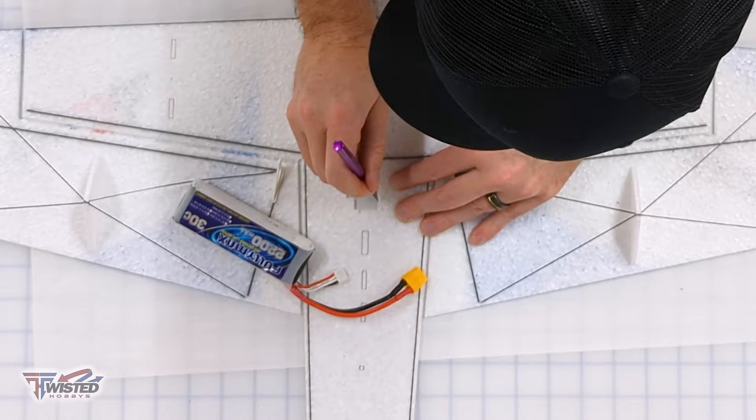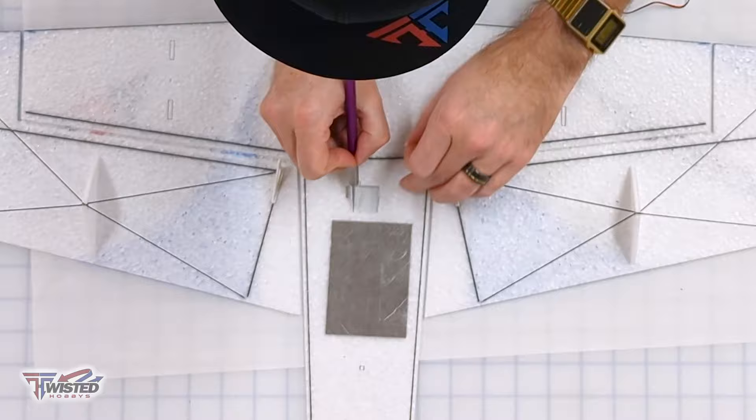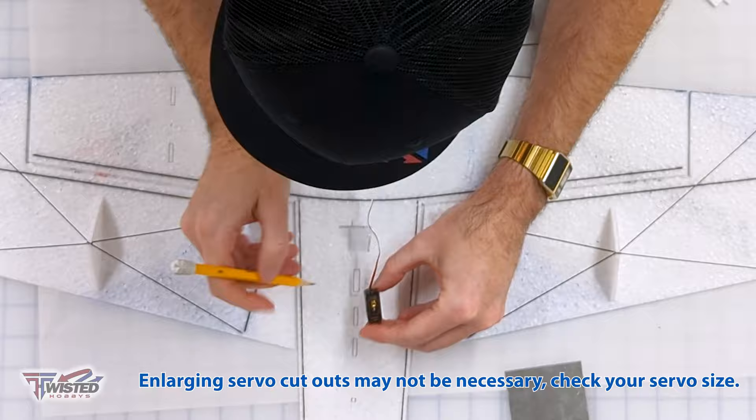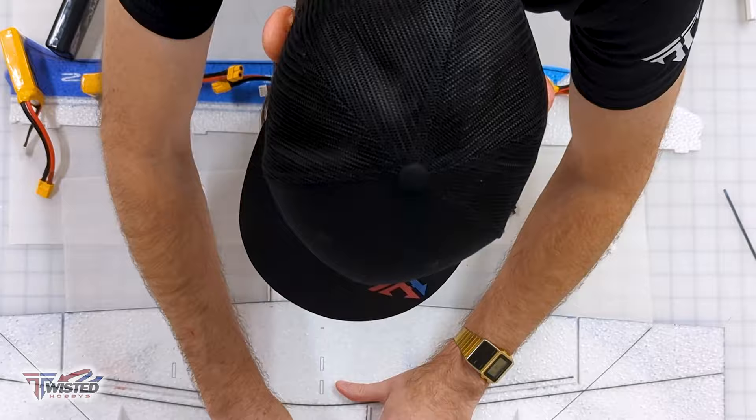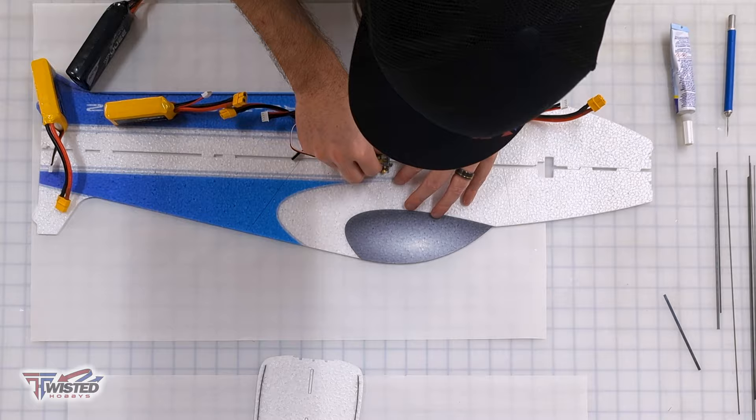And then this is a great time to make sure that your servos are the right size for the holes that you have. I had to go in and cut mine a little bit bigger. I found that if you trace around with a pencil, then that gives you a pretty good guide to use to open up those holes. I'm using a piece of metal here just as a straight edge.